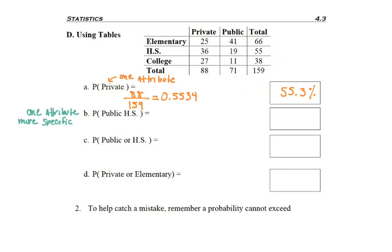So I come over to the public sector, but I'm only interested of all of those in somebody who goes to high school. They go to a public school that happens to be a high school, and only 19 people satisfy that criteria. So 19 of the 159, we're still counting the whole population, which would be 11.9% of these students fit that category.